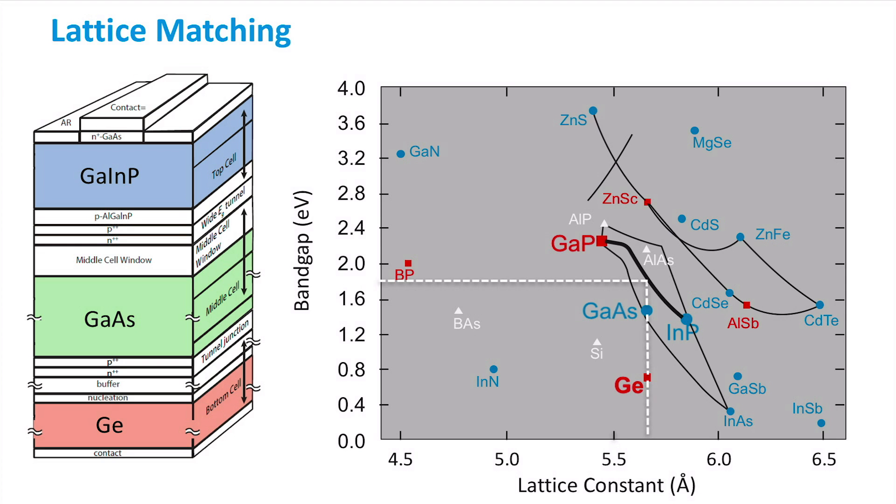By looking at the phase diagram, we can see that there is no viable lattice match option for such a material. A trade-off therefore exists for choosing a material in a 3-5 multijunction device.